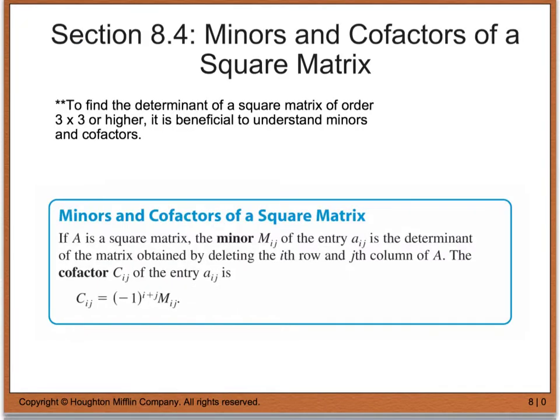The equation we just learned deals with a 2 by 2 matrix. That works fine for a 2 by 2, but any time we're given something bigger — such as a 3 by 3, a 4 by 4, or anything larger — we're going to have to use what we call minors and cofactors.